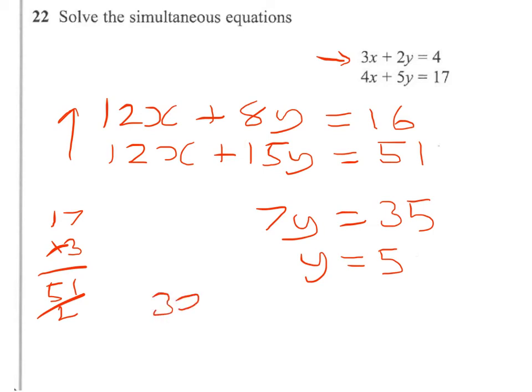And that gives me 3x plus 2y equals 4. Now 2y is going to be 10. Hopefully you can see that - 2 times 5 is 10.